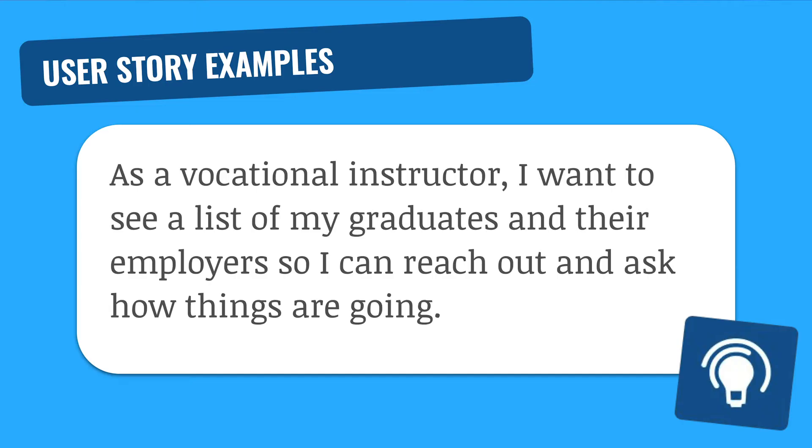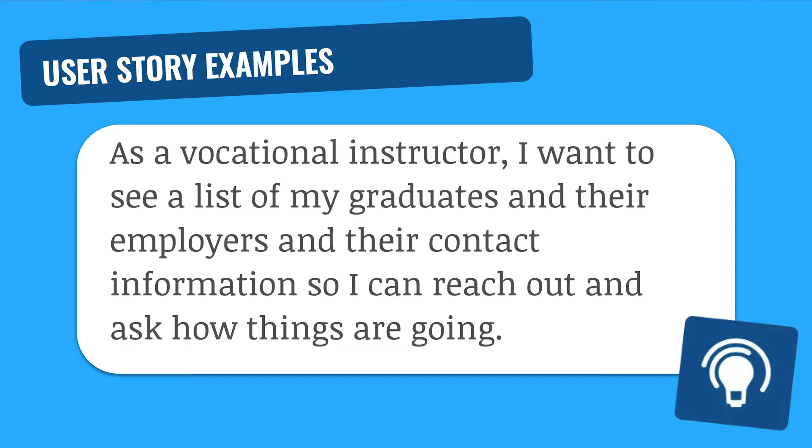Alright, then also we've got B, so that they can contribute their profile details. Now, in some cases, it's okay not to have all the detail around the intent for B, because we're going to describe that later. Here's another example. As a vocational instructor, I want to see a list of my graduates and their employers so I can reach out and ask how things are going. That's okay. It could be clarified a little bit. Maybe we could say, as a vocational instructor, I want to see a list of my graduates and their employers with their employer's contact information so I can reach out and ask how things are going.